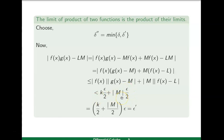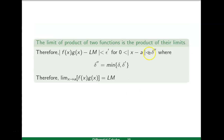Taking epsilon common from both terms we write the combined value as epsilon-dash. So |f(x)·g(x)−lm| is less than epsilon-dash for zero less than |x−a| less than delta-double-dash, where delta-double-dash is defined as the minimum of delta and delta-dash. Therefore, by the epsilon-delta definition, limit x approaches to a of f(x)·g(x) equals l·m.